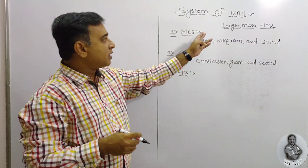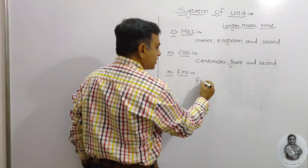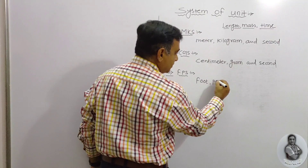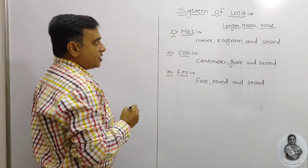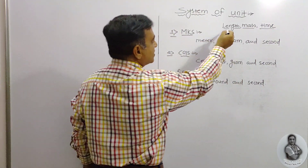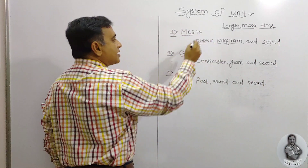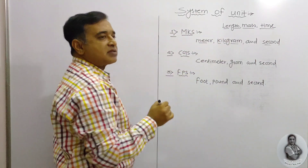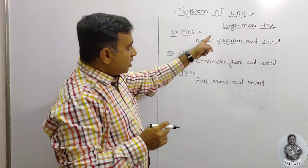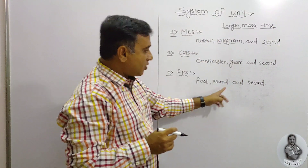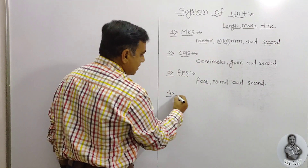The next one is the FPS system. In this system, the physical quantities — length, mass, and time — are measured in foot, pound, and second respectively. So to summarize: in MKS, length, mass, and time are measured in meter, kilogram, and second; in CGS, in centimeter, gram, and second; and in FPS, in foot, pound, and second. The last one is the SI system.